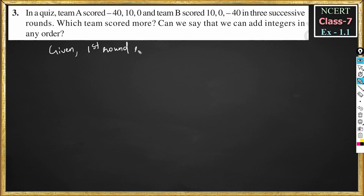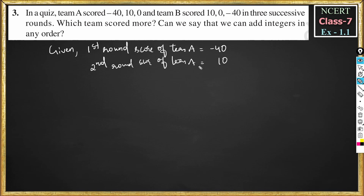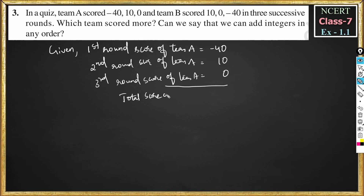Given: first round score of team A is equal to minus 40, second round score of team A is equal to 10, and third round score of team A is equal to 0. By adding all these, we get total score of team A. Total score of team A is equal to minus 40 plus 10 plus 0, which is equal to minus 30.